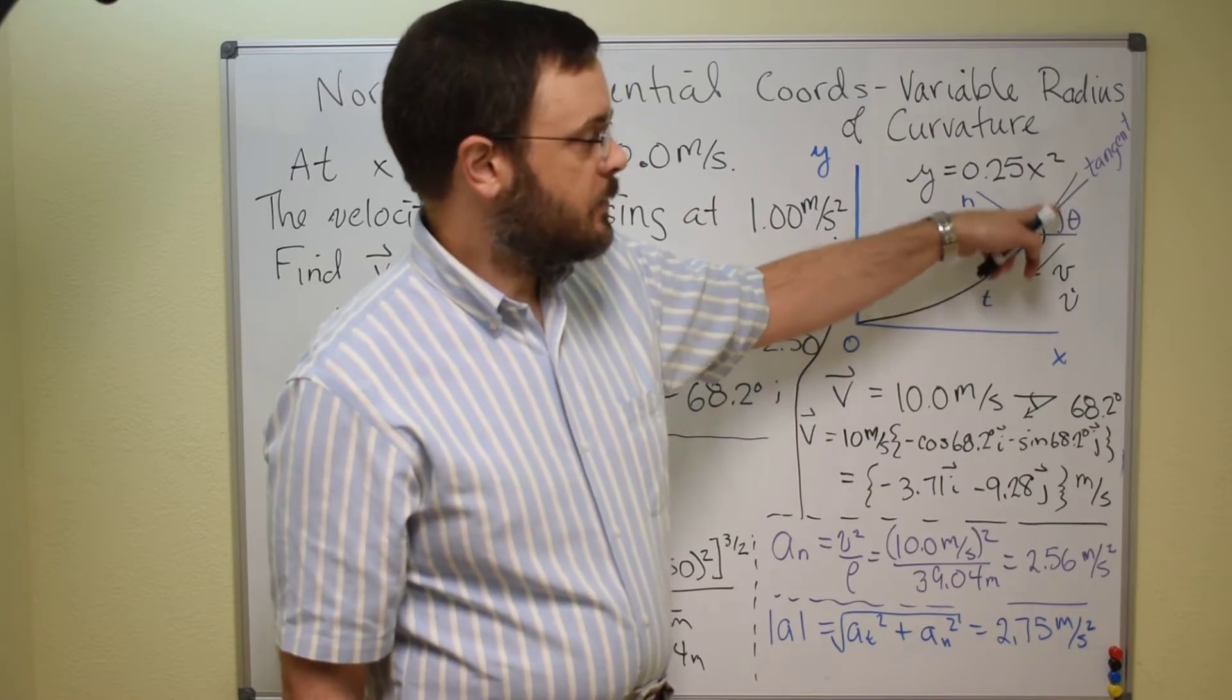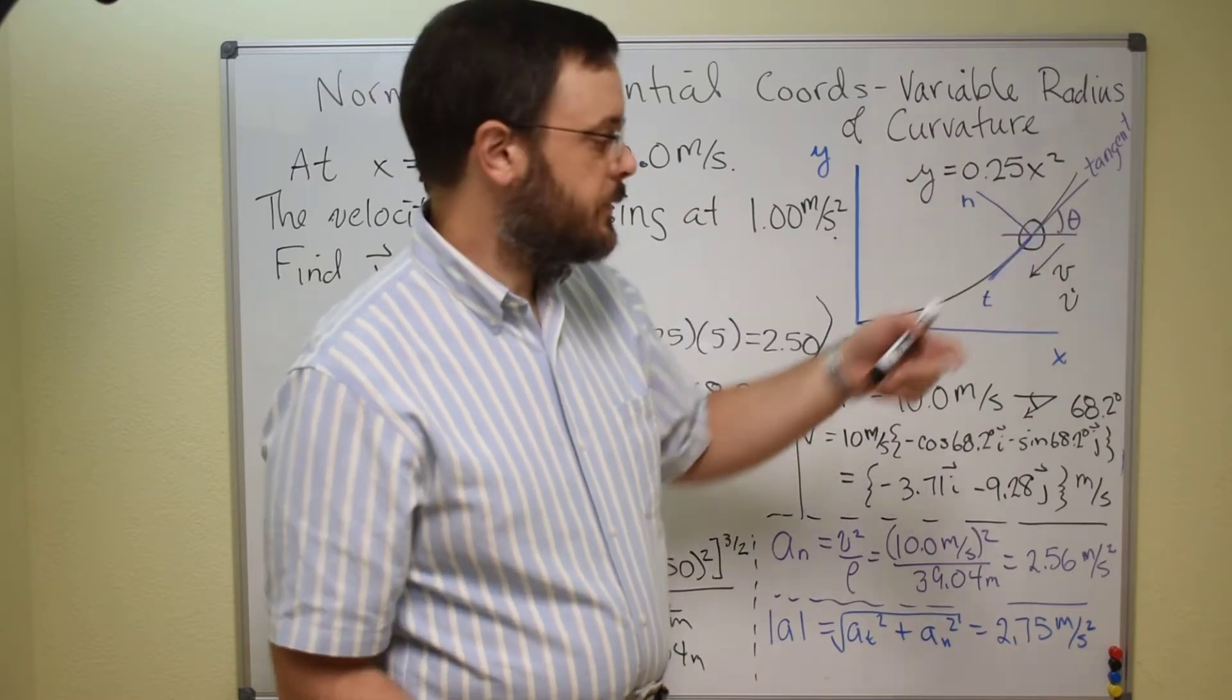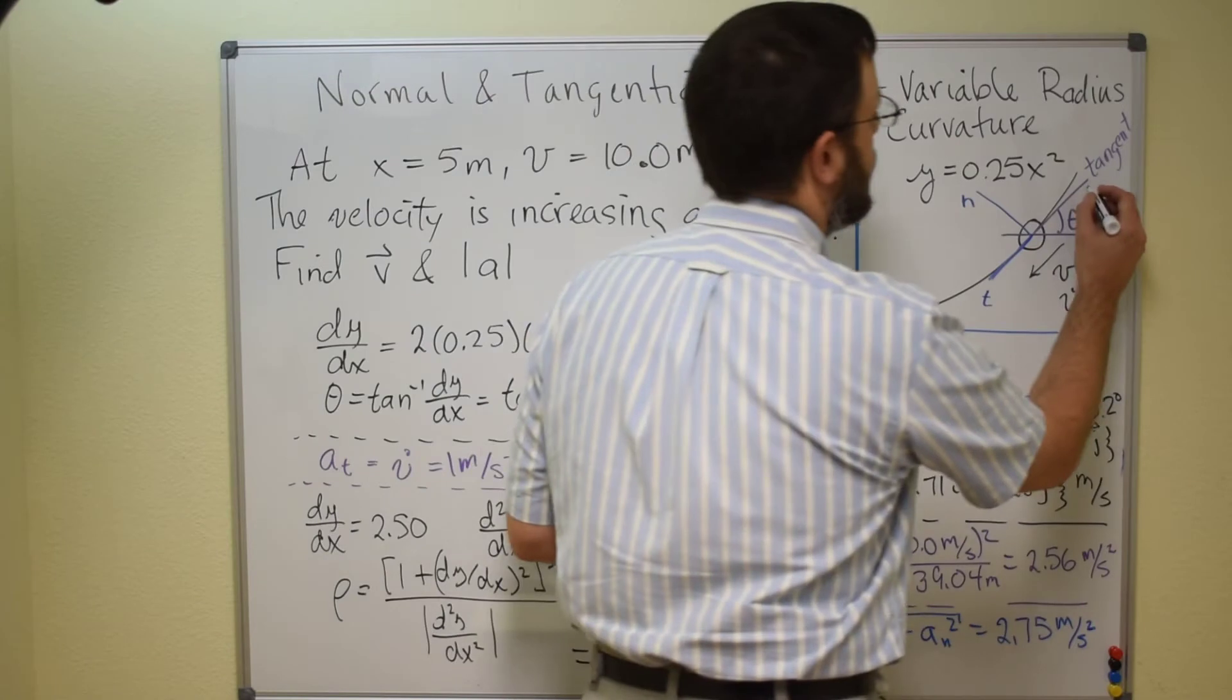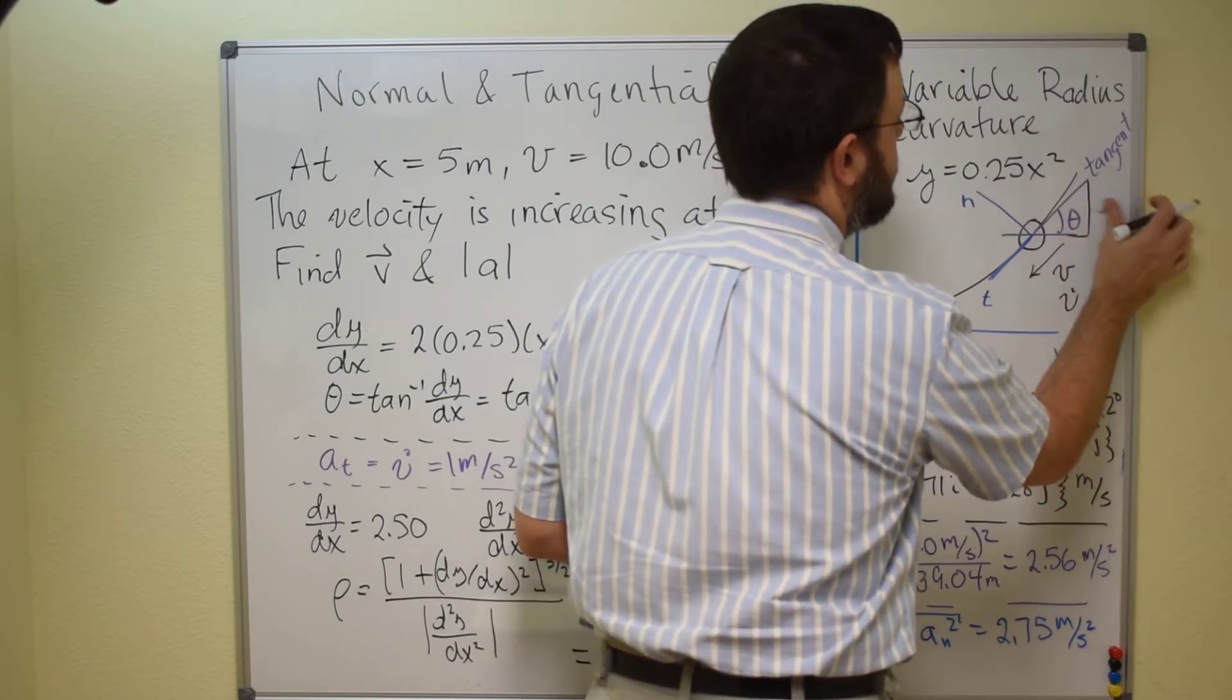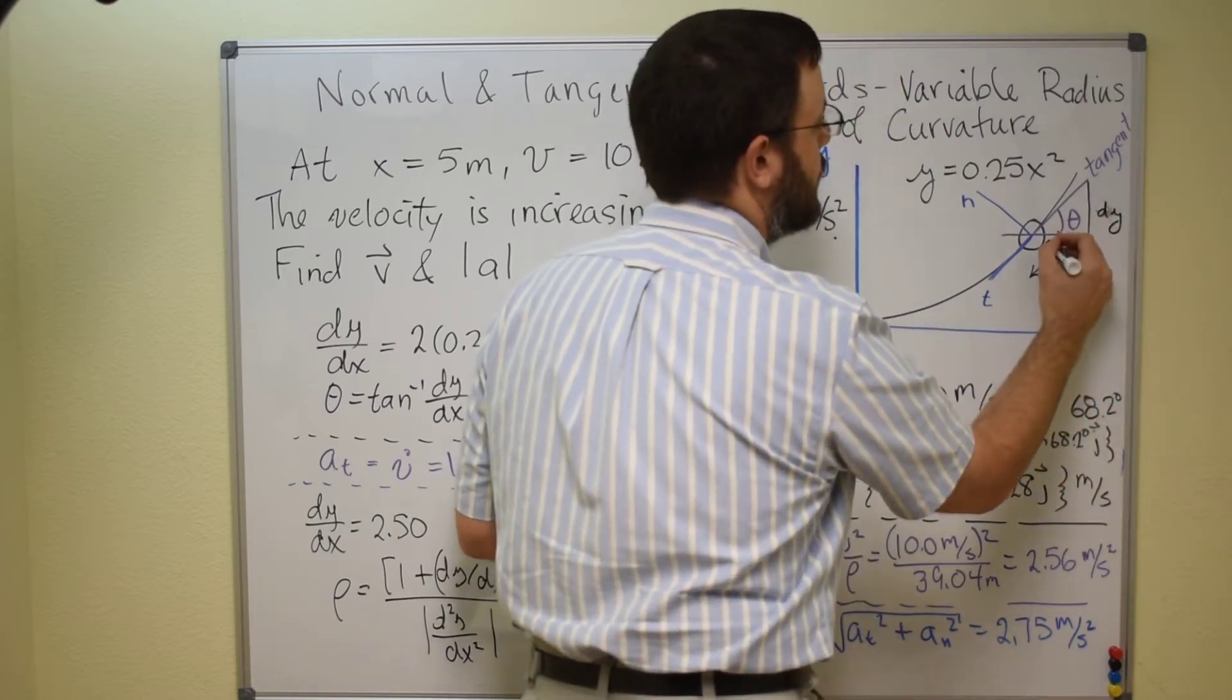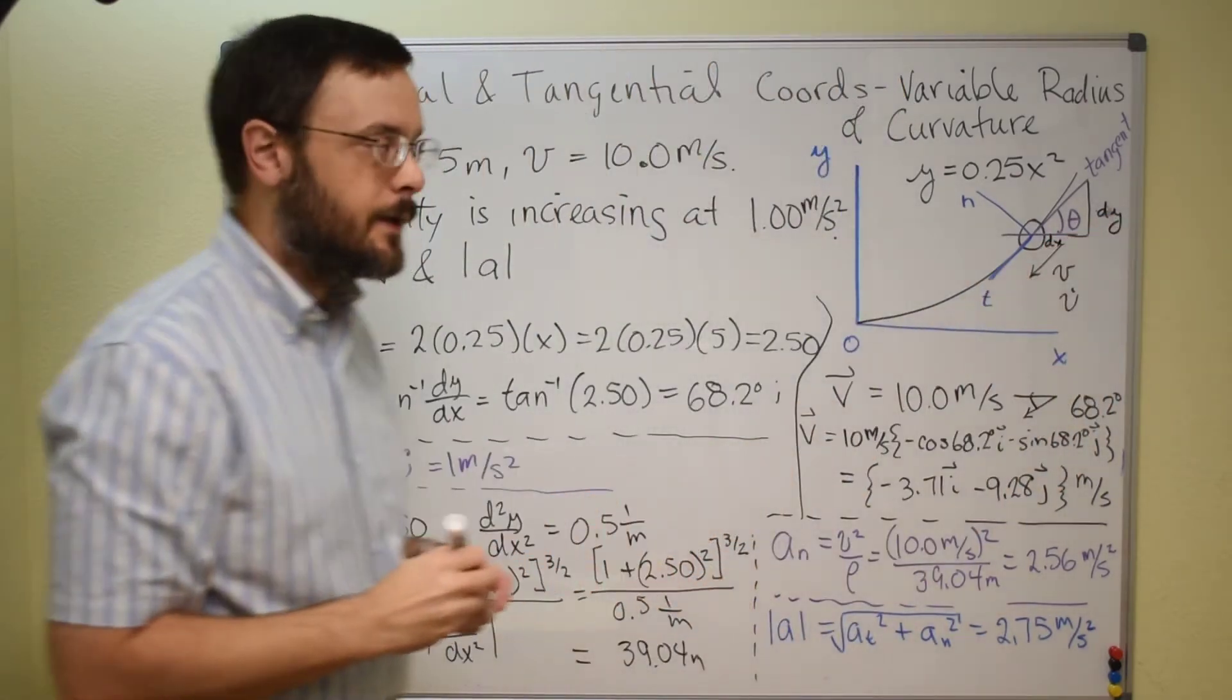then we can think about this angle theta then, and this angle theta is going to be in this little triangle where this is dy, and this side over here is dx.